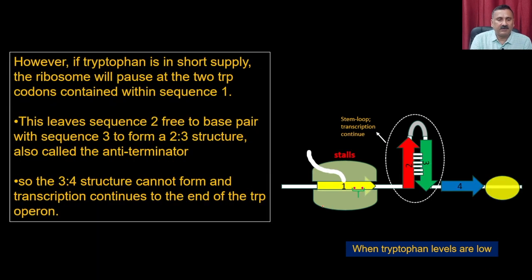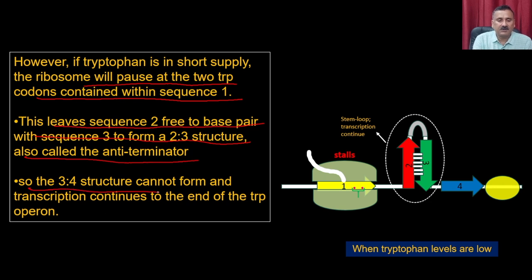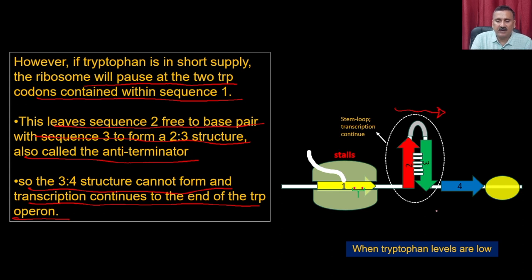When tryptophan is in short supply, the ribosome pauses at the 2 tryptophan codons contained within region 1. This leaves region 2 free to base-pair with region 3, forming the 2-3 structure called the anti-terminator. The 3-4 terminator structure cannot form, and transcription continues to the end of the tryptophan operon, allowing synthesis of the messenger RNA needed for tryptophan synthesis.